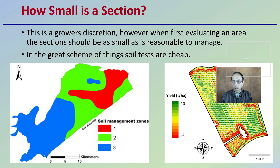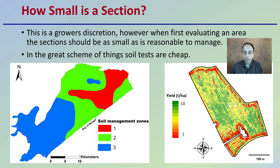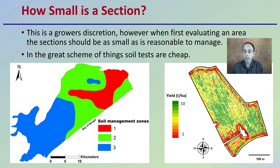How small of an area should we section? How fine or how broad do we detail something? Really, it comes down to the grower's discretion. However, when first evaluating an area, these sections should be as small as reasonable to manage. Soil tests are cheap, and you probably don't have to go to an extremely fine detail level, but taking a couple more soil tests just to confirm something is a great point of advisement. If they do come back the same, it does not mean you have to keep sampling that many times, but it's good initially to get that kind of idea, especially if it's a new area.